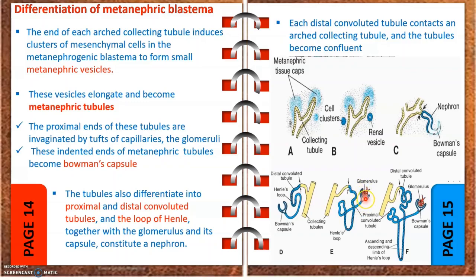Due to this invagination by the glomerulus, the invaginated part of the metanephric tubes is called the Bowman's capsule. The capillary tuft or glomerulus lies within this invaginated part. Filtration occurs here, and the filtrate follows this path to the collecting tubules, then exits through the minor and major calyces.